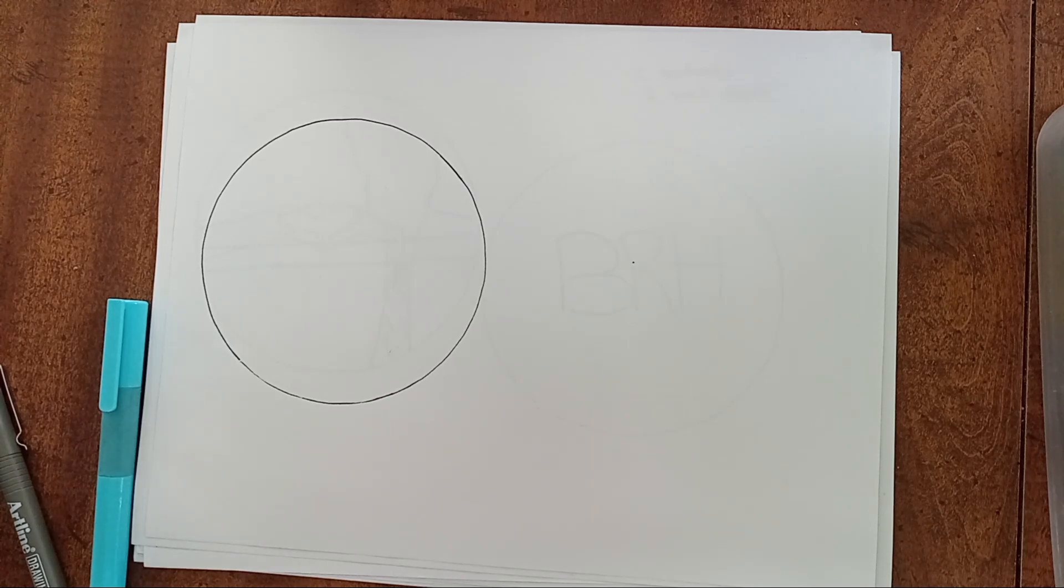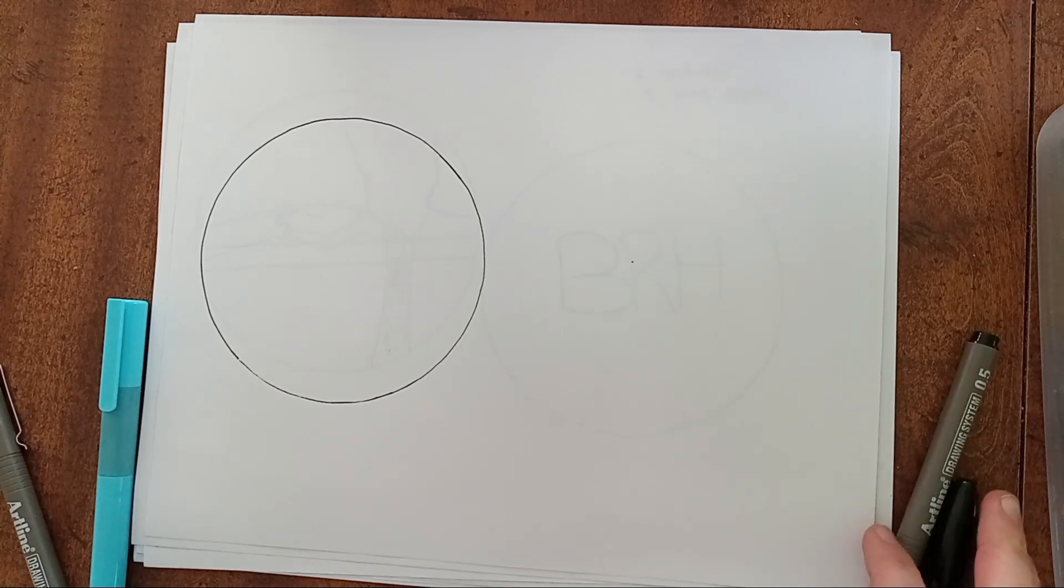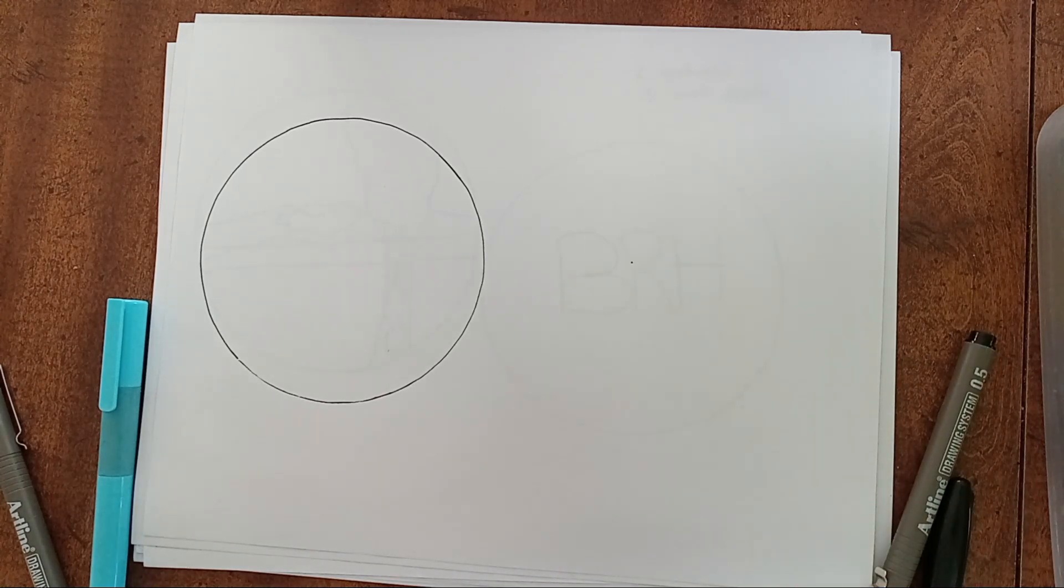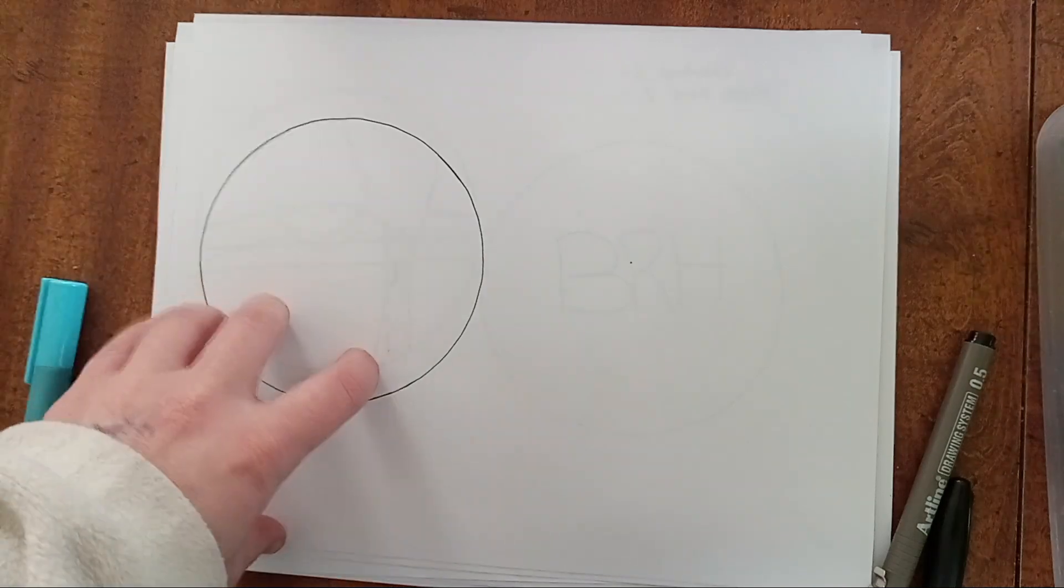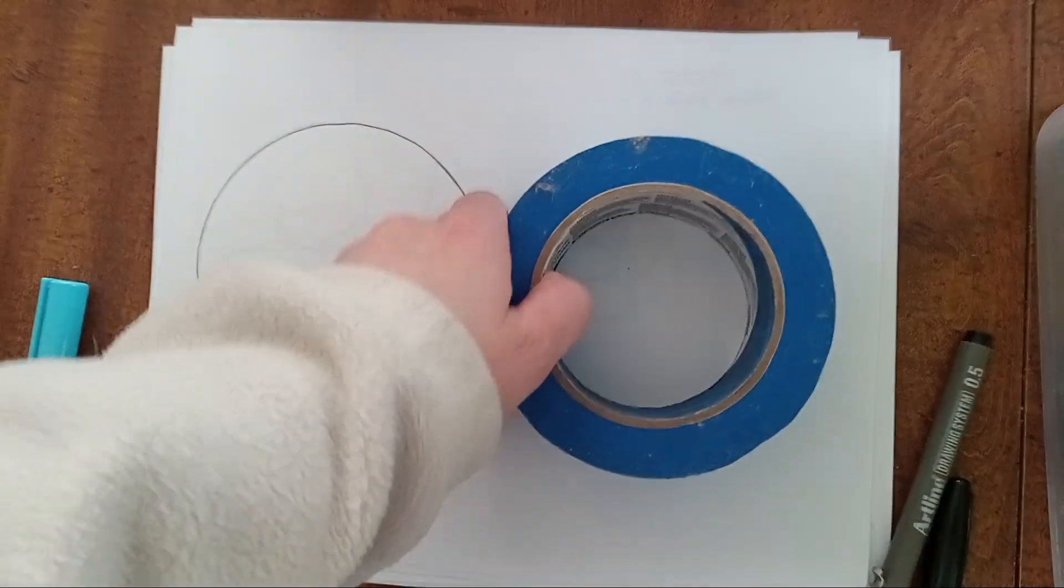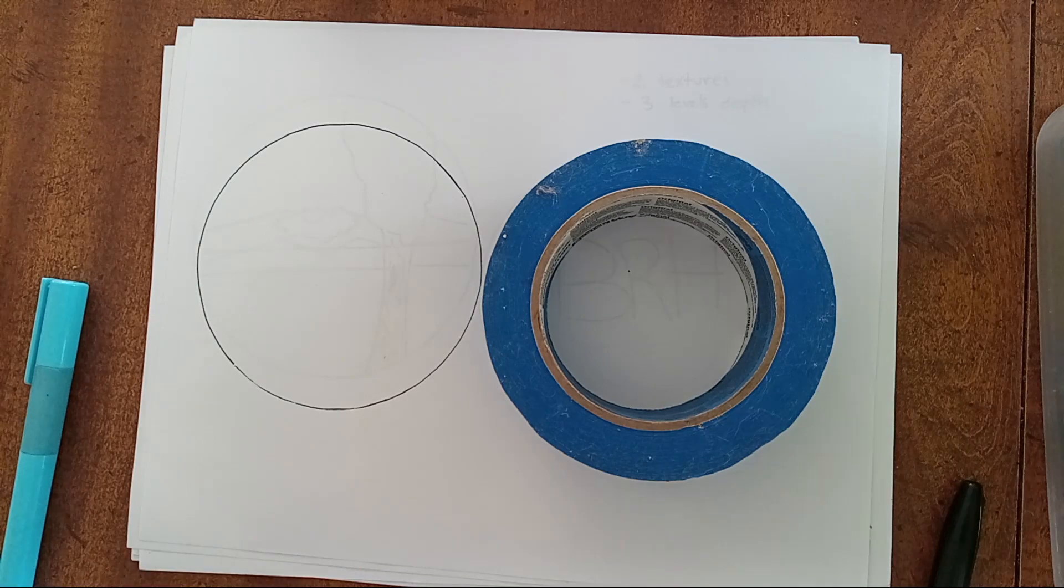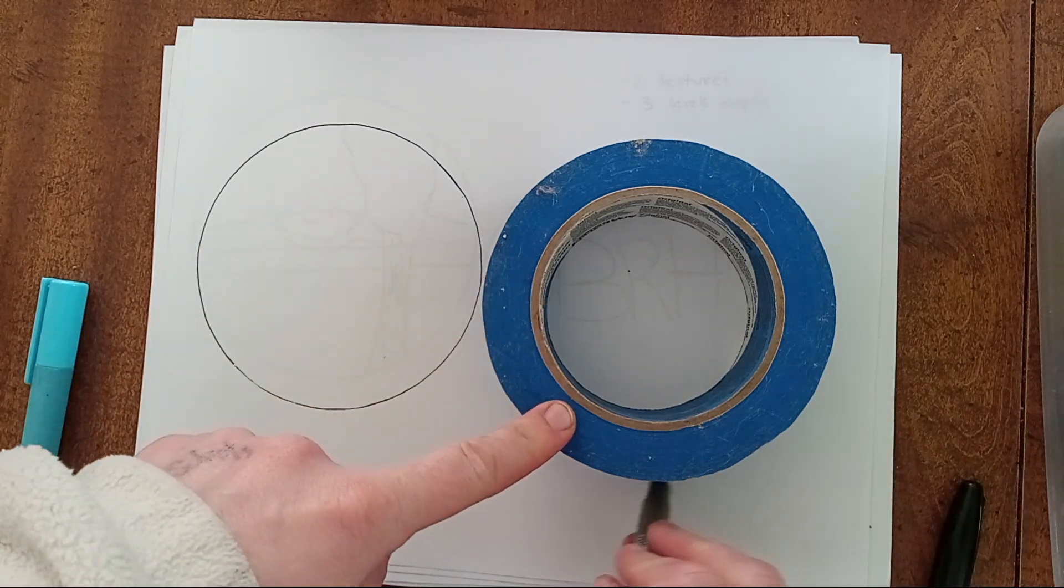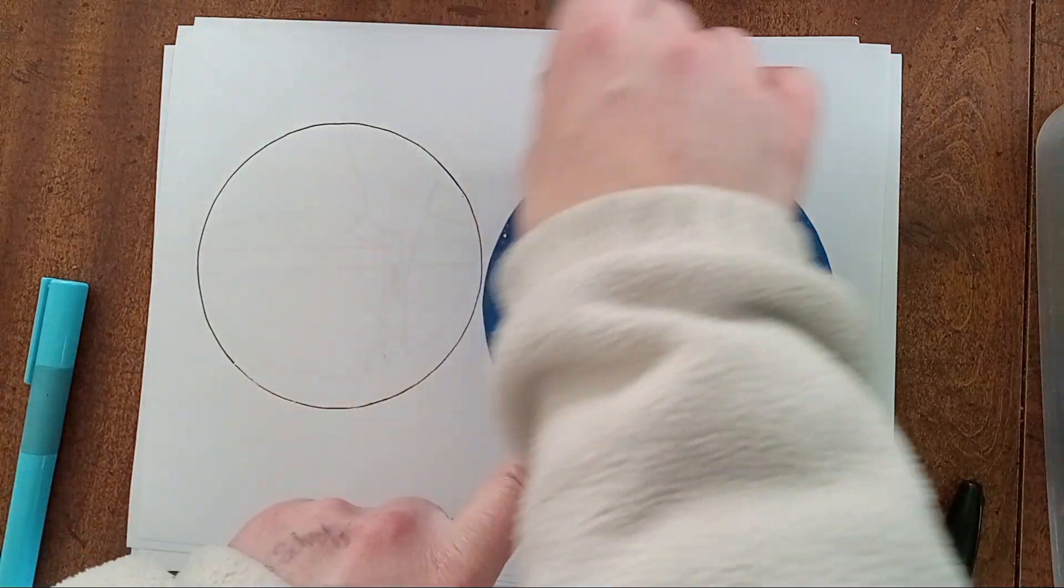...are going to be in these plates with plaster, so they have a very round bottom, about five or six inches in diameter. You can grab a piece of paper and draw two circles, or I just grabbed tape that's roughly five to six inches in diameter and made two circles this way.